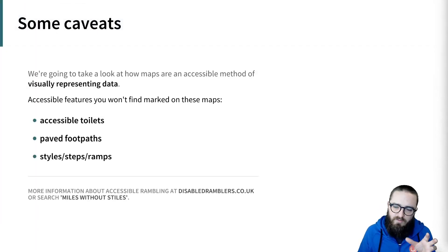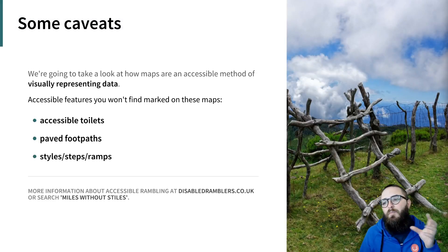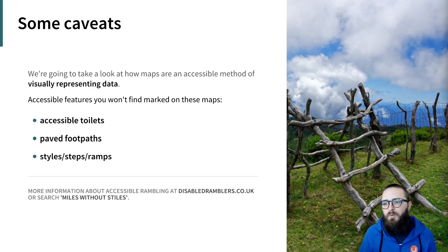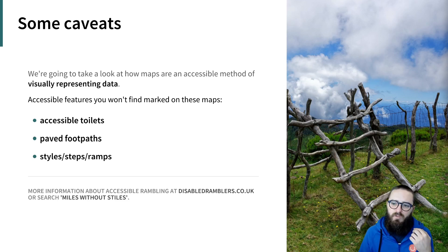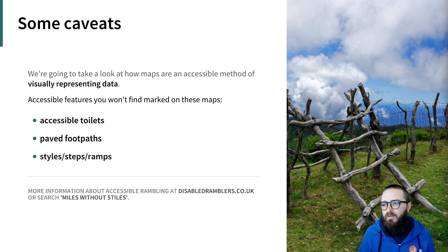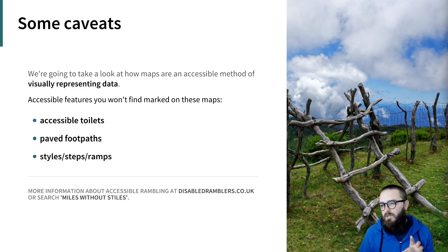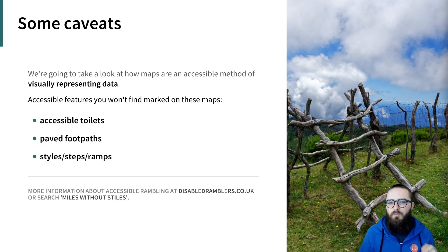Some caveats though: we're going to take a look at how maps are an accessible method of visually representing data. The outdoor maps I'm going to show you are pretty poor at highlighting accessible features, facilities, or routes. You won't find accessible toilets, paved footpaths, footpaths without stiles, etc., marked on these maps. I do however think that as a visual method of representing data they are a good example, even if they don't convey information about accessible features.